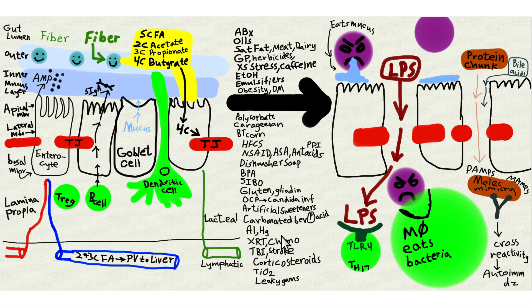AL and HG are associated with leaky gut — AL is a bigger problem than people realize. Radiation therapy (XRT) and chemotherapy, especially to the abdomen, are associated with leaky gut. Traumatic brain injury increases blood-brain barrier permeability, and things that increase blood-brain barrier permeability tend to also cause leaky gut. Having a stroke similarly increases blood-brain barrier permeability and risk of leaky gut. TBI can result from contact sports like soccer.